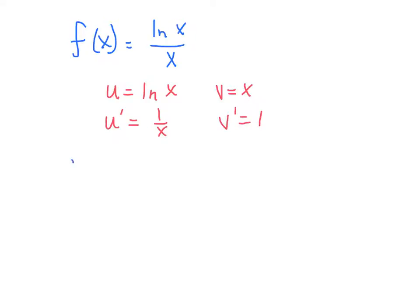Then to set up the derivative of the function, we follow our quotient rule, which is v times u prime minus u log of x times v prime, which is 1.